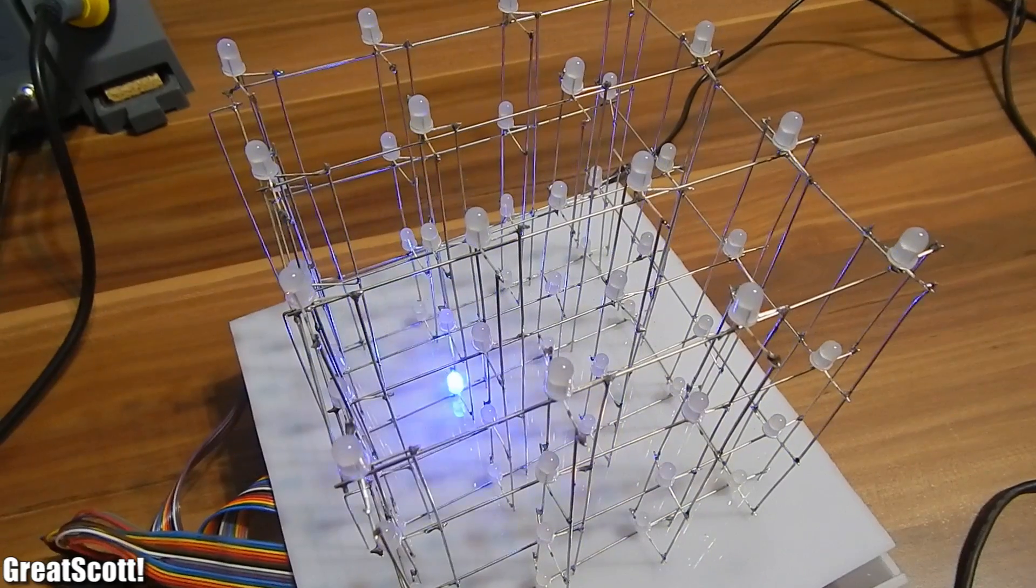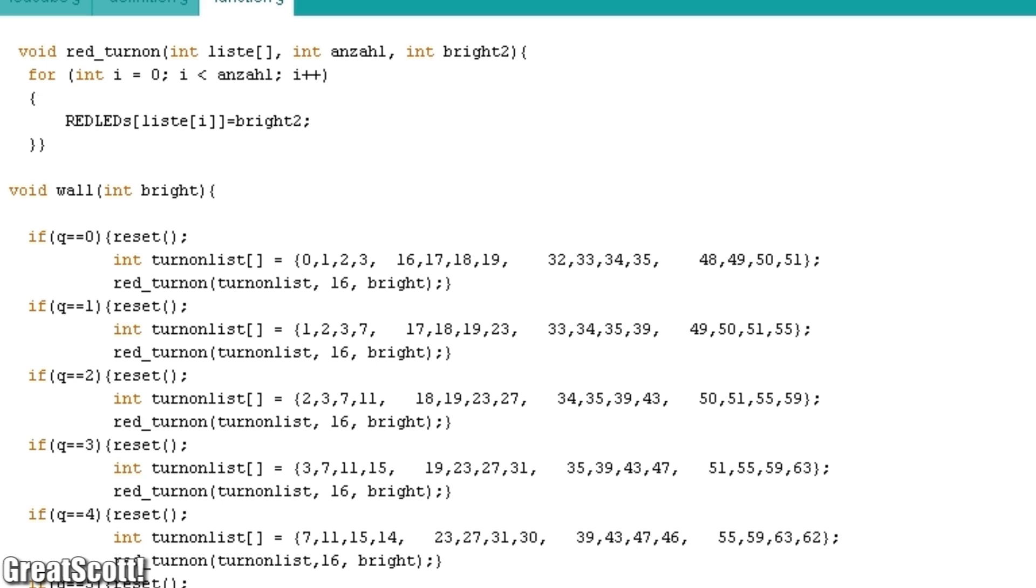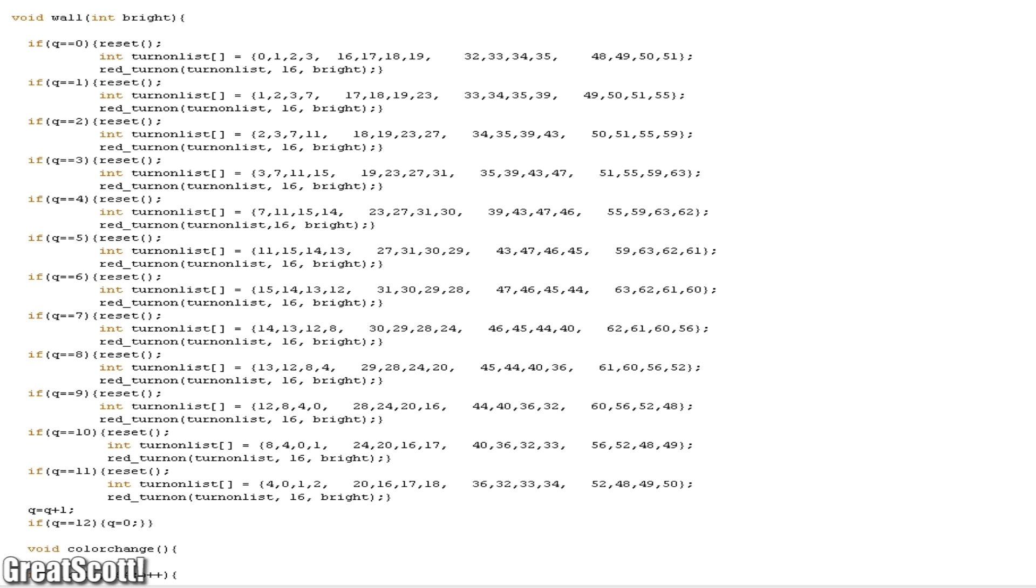Making more complex animations takes more time. Here is one I made which consists of two functions. The red turn on function turns the red LEDs on, obviously, which are defined in the turn on list. And in the war function is the turn on list of the red LEDs defined.